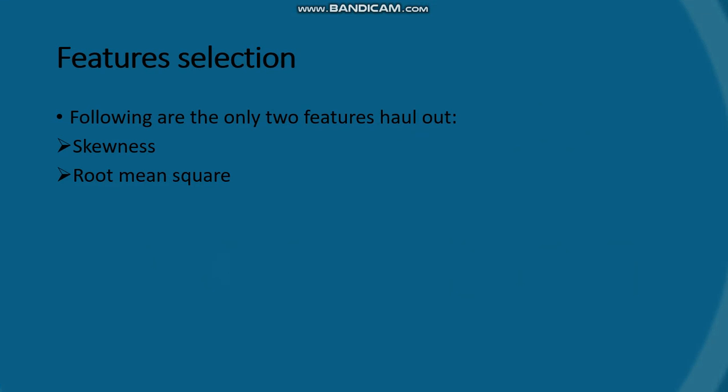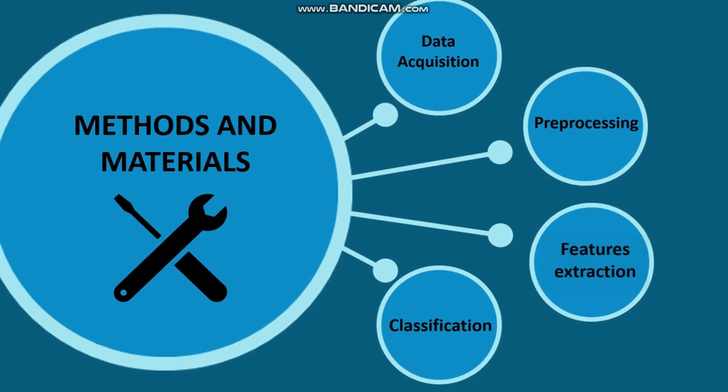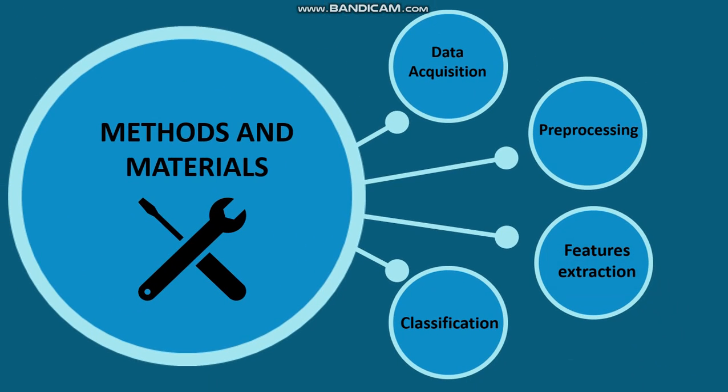Moving towards feature extraction: the main aim of this research is to enhance the efficiency of the classifier. It is necessary to find the most compact and discriminative set of features that can best distinguish between healthy and unhealthy bearings using vibrational signals. In this research, only two features are extracted, named skewness and root mean square.